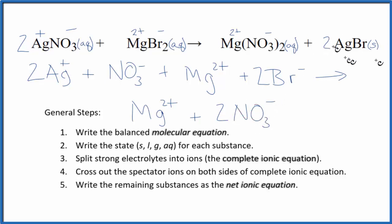And then, because we have a solid here for silver bromide, for solids in net ionic equations, we don't split them apart. So it's just going to be two AgBr. And this is the complete ionic equation.